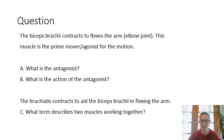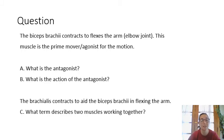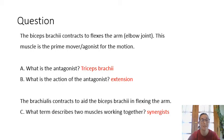Let's go through a couple of review questions. Biceps brachii contracts to flex the elbow — it is the prime mover. What is the antagonist, and what action does it perform? And since brachialis contracts to aid biceps brachii, what term describes those two working together? The antagonist for biceps brachii is triceps brachii, because it does the opposite movement — extension. The brachialis is a synergist with biceps brachii for flexion of the elbow.